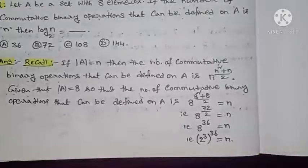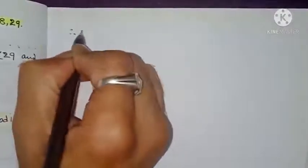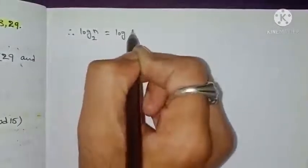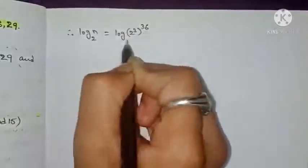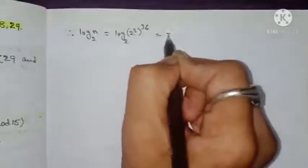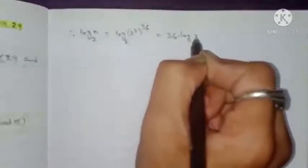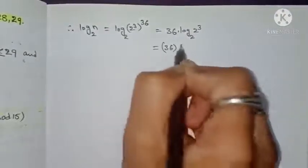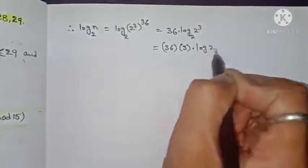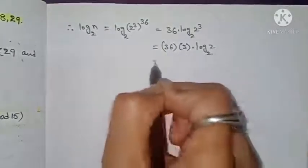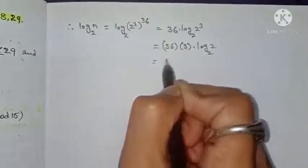Therefore, log N base 2 equals log of (2 cubed) to the power 36, base 2. By using logarithmic properties, this can be written as 36 times log 2³ base 2, which is 36 times 3 times log 2 base 2. By logarithmic property, log 2 base 2 equals 1. So we have 36 times 3, that is 108.